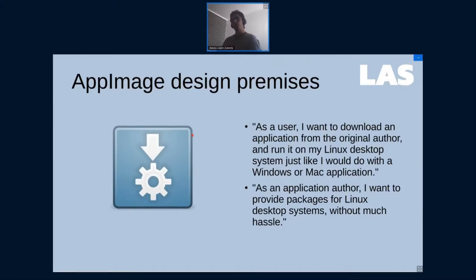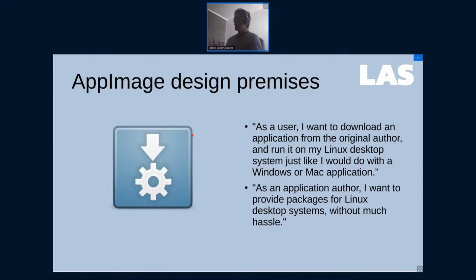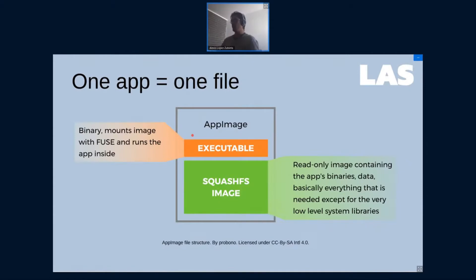AppImage has two main design premises. From the user point of view, they have to be easy to acquire and to run, just like we do with Windows or a Mac application. From the developer point of view, the application should be able to run in almost every Linux distribution without having to make a package for every single distribution.